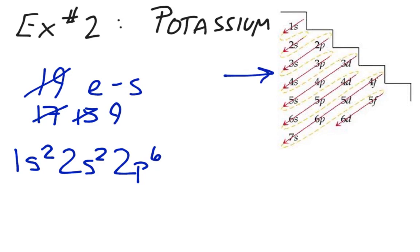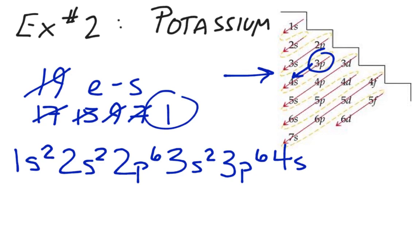After the 2p, according to the diagram over here, comes the 3s. Again, because we're talking about an s, we're talking about only being able to house two electrons. Take that off of our total, we're left with seven remaining. Next comes the 3p. The 3p can hold a maximum of six. So we place those six in there, leaving us with one more. After the 3p, the arrow points to the 4s. 4s, like any s, can hold a maximum of two. Of course, we only have one more remaining, so we'll place that one in there and we're all set.